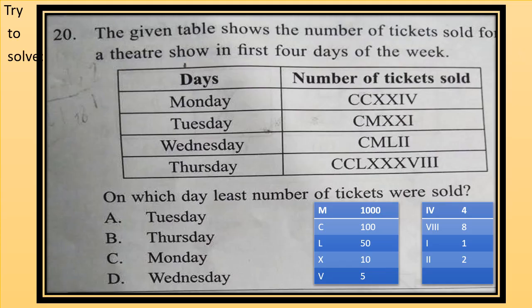Let's start the video with our first question. The given table shows the number of tickets sold for a theatre show in first 4 days of the week. Days are given and number of tickets sold on that day is given in Roman numbers. Now on which day least number of tickets were sold?